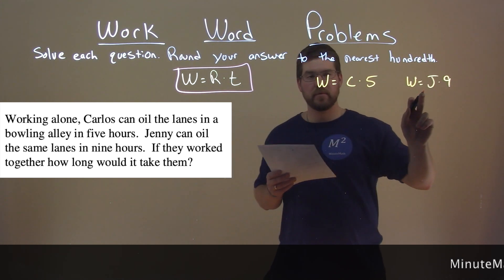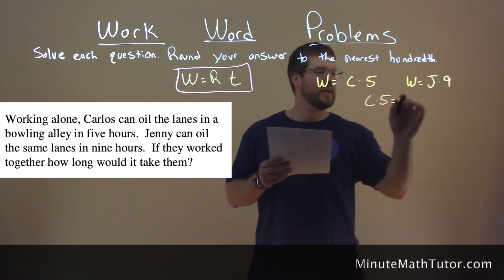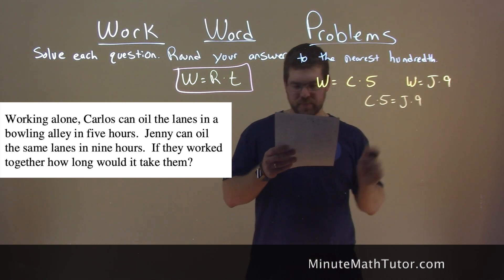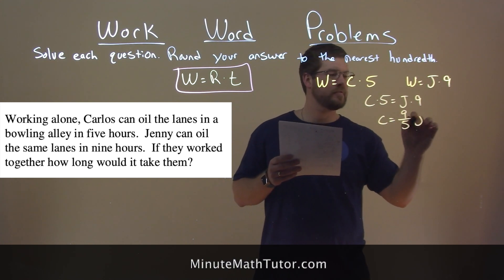Since they're both equal to W, we can set them equal to each other. So C times five equals J times nine. And let's get C by itself here, and C equals nine-fifths of J.